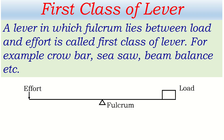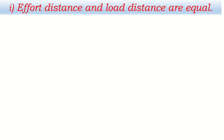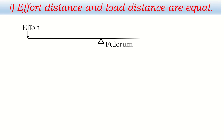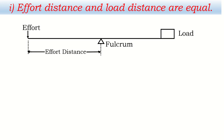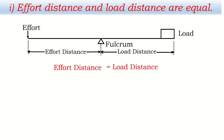Examples of first class levers include a crowbar, see-saw, beam balance, nail cutter, and pair of scissors. The first class lever may have three different conditions. The first condition is when effort distance and load distance are equal. If the fulcrum is in the middle of the effort and load, then the effort distance and load distance become equal.